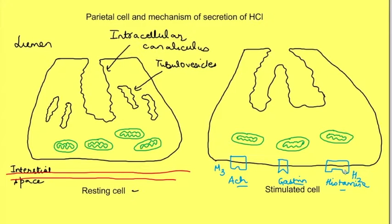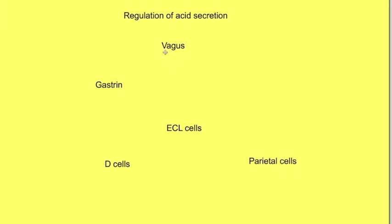We can actually simplify it as levels of control of acid secretion. These levels can be arranged as neural, hormonal and paracrine manner. So vagus is the one which releases acetylcholine, acts in a neural manner. Gastrin is released in blood and acts in hormonal manner. ECL cells release histamine which acts on parietal cells in paracrine manner.